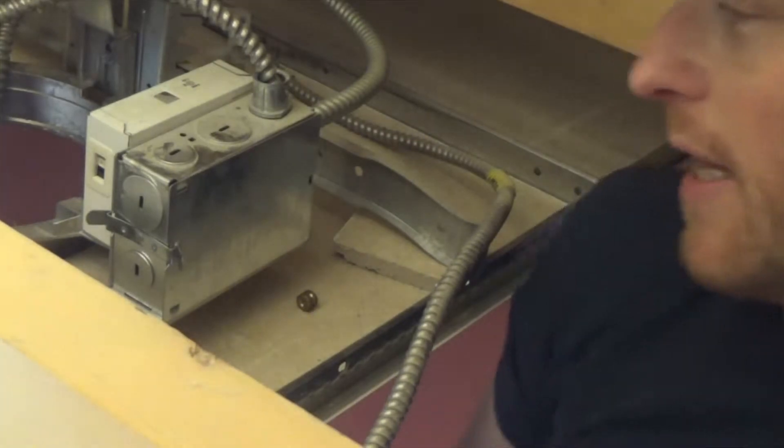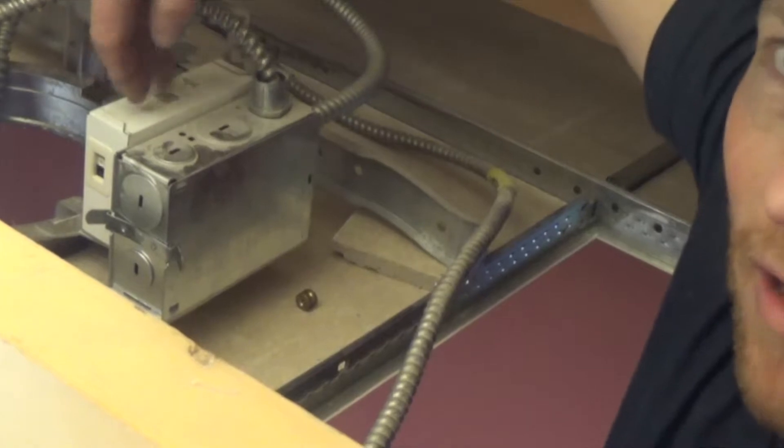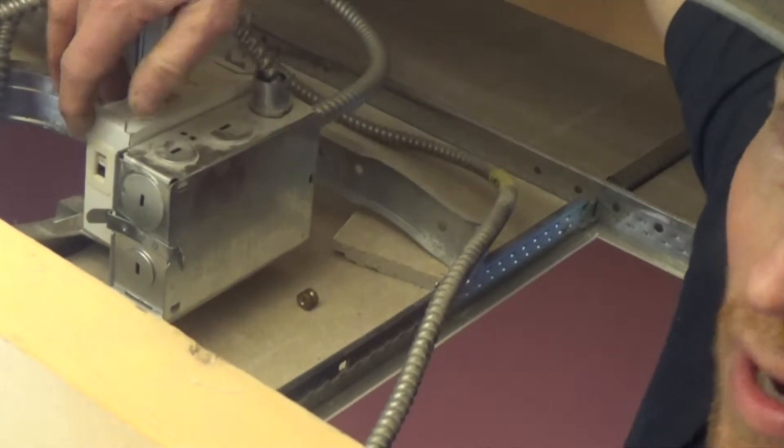Hey guys, here we are above the ceiling and what you're looking at is the junction box for that can light. And on the back side of that, what you're looking at is the ballast or the transformer.